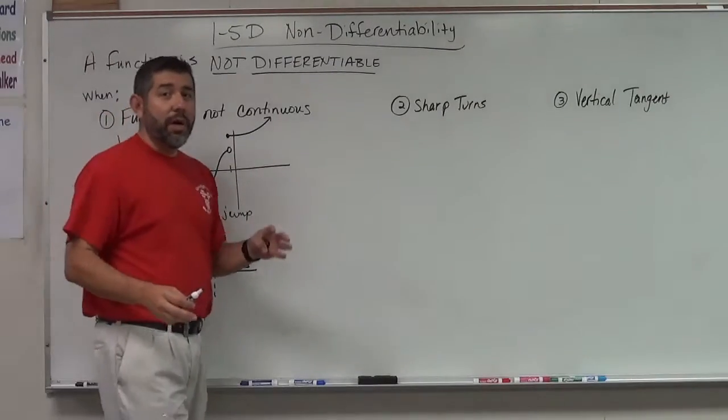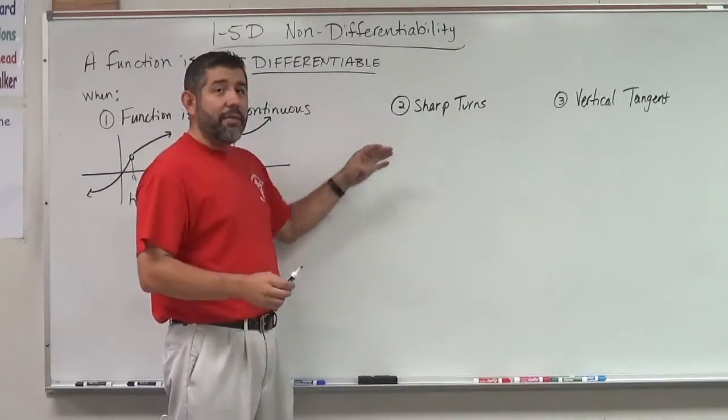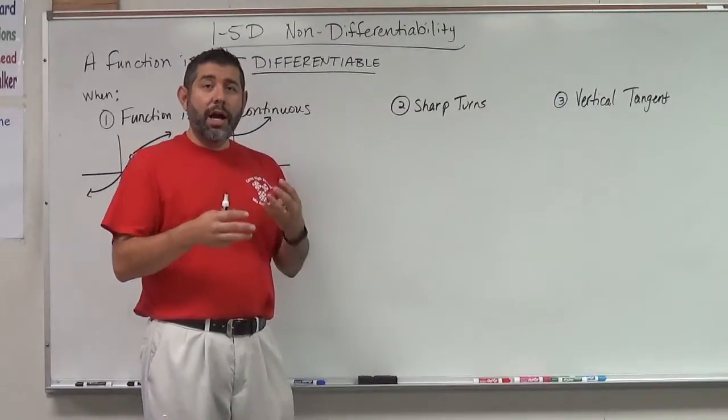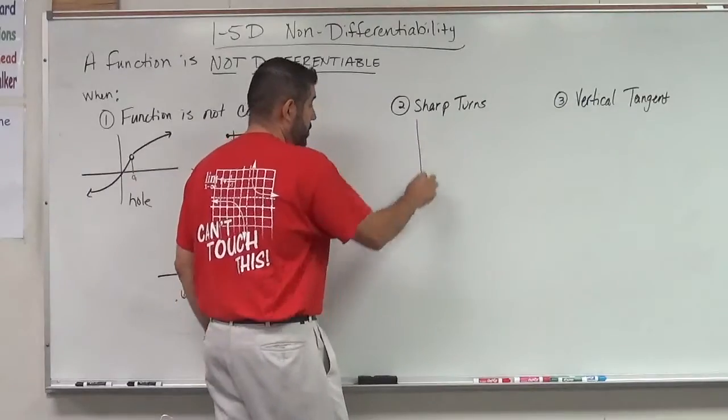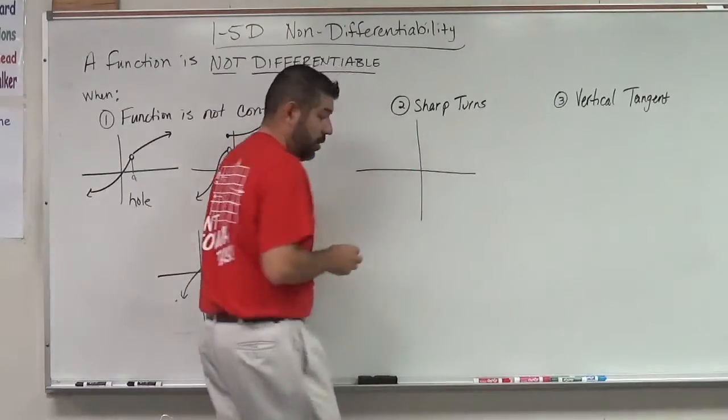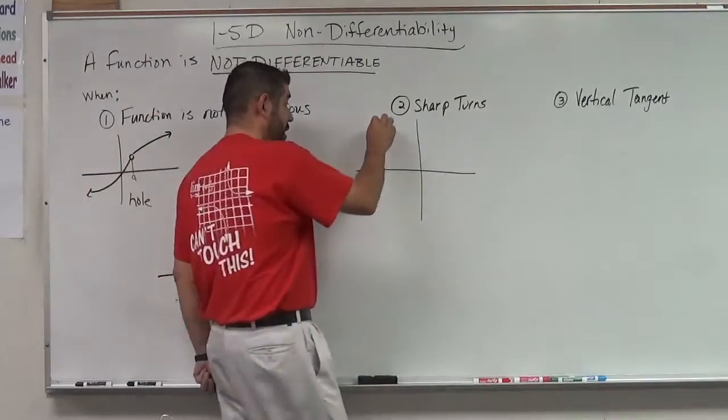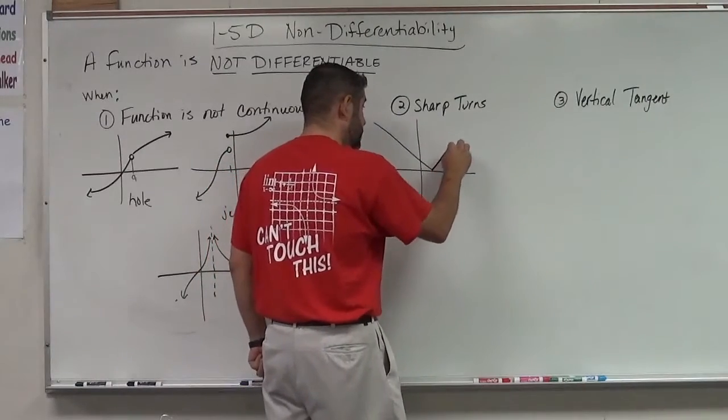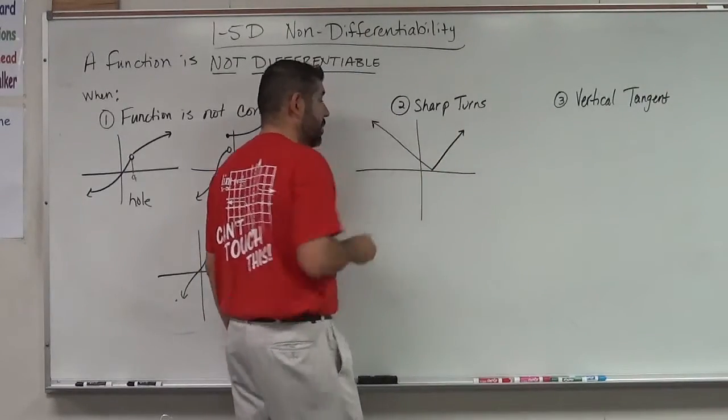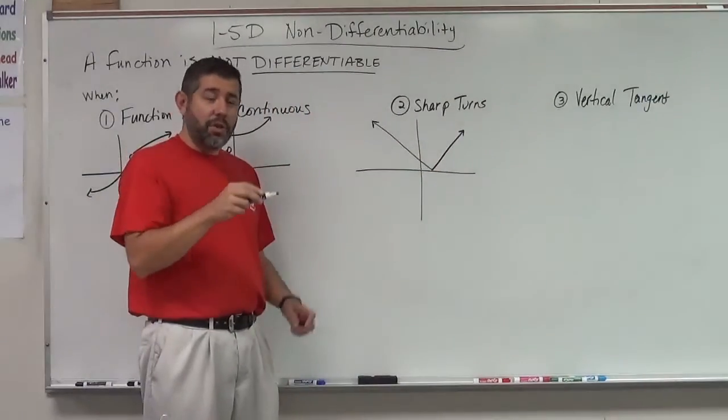Now there are two other cases that are pretty interesting too. Wherever we have a sharp turn, we're not going to have differentiability. So something like an absolute value graph, something like that, or anything that has a sharp turn.